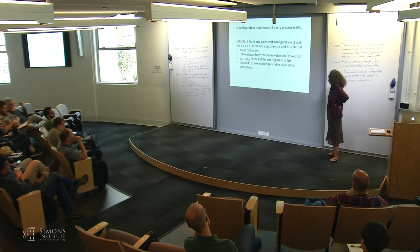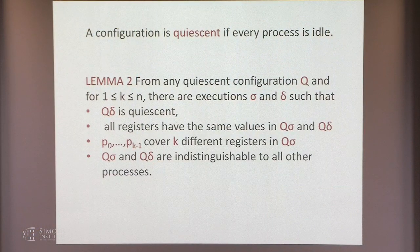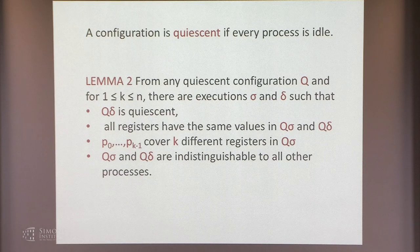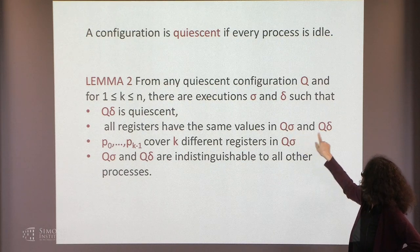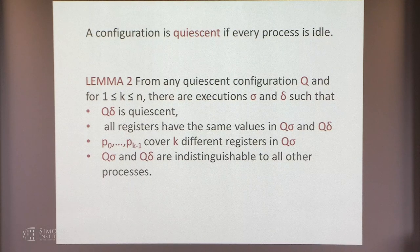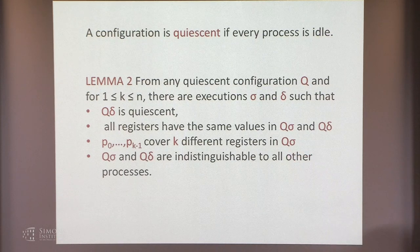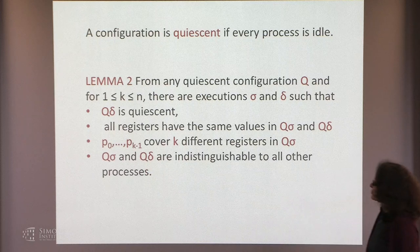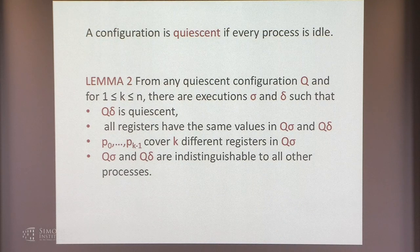All the registers have the same value in Q-sigma and Q-delta. In configuration Q-sigma, the first K processes P0 through P_{K-1} all cover different registers. Finally, these two configurations, Q-sigma and Q-delta, are indistinguishable to all other processes P_K through P_{N-1}. We'll prove this lemma, but first we'll prove the theorem using it.